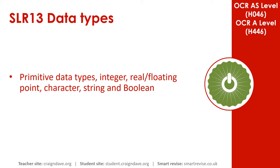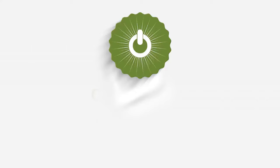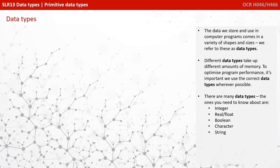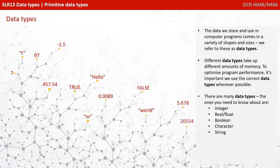In this video we discuss some of the common primitive data types. The data we store and use in computer programs comes in a variety of shapes and sizes. We refer to these as data types. Different data types take up different amounts of memory. To optimise program performance, it's important we use the correct data type wherever possible.